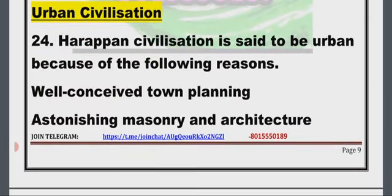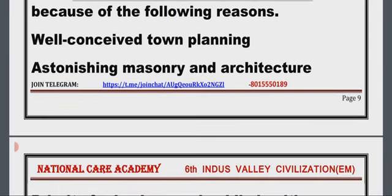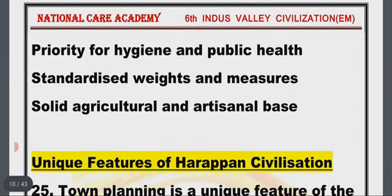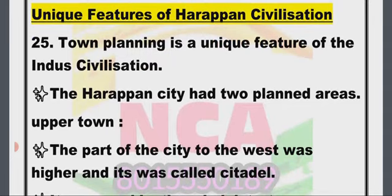Point 24: Harappan civilization is said to be urban because of the following reasons: well-conceived town planning, astonishing masonry and architecture, priority for hygiene and public health, standardized weights and measures, and a solid agriculture and artisanal base. Point 25: Town planning is a unique feature of the Indus Civilization.